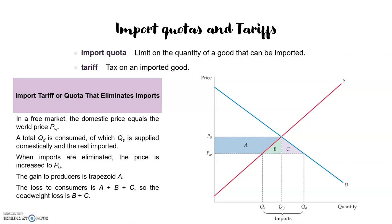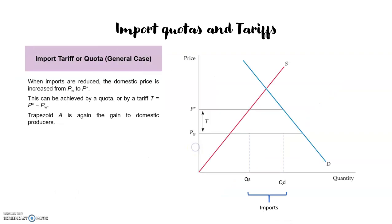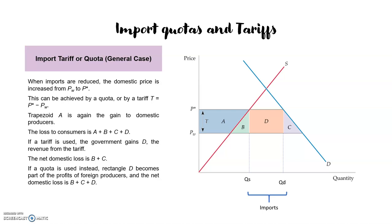But this is not interesting for the government, because they are not earning anything — they have no revenues from this situation. Why? Because the tax cannot be imposed on any imports, since there are no imports at all; imports are equal to zero. So which situation would be better for the government? A situation where the tariff doesn't completely eliminate the imports — the quota doesn't eliminate imports completely. Let's see the situation where the tariff on imports is T, the upper case T. So the tariff will be the difference between Pw, the world price, and P star.